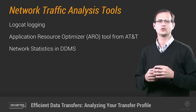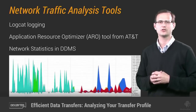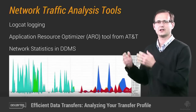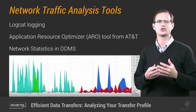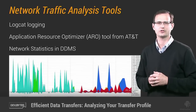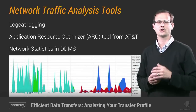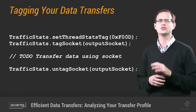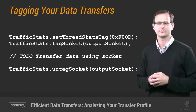Another great alternative is to use the Network Statistics tab in the DDMS view, which is part of the Android developer tools. As you can see in this screenshot, it displays the amount of data being transferred in the direction of the data flow. Additionally, you can tag your output sockets to color code your data transfers, making it easier for you to see where each transfer is originating.